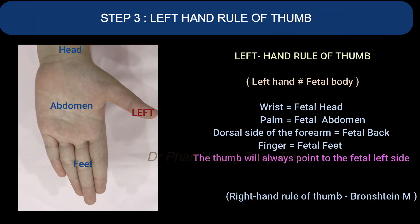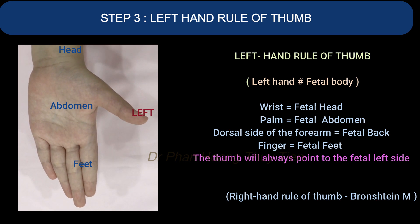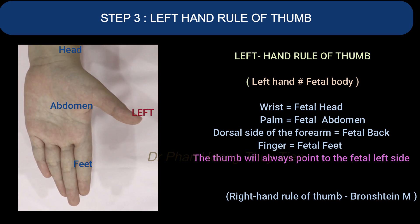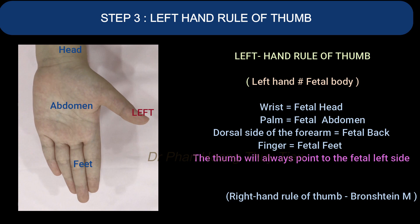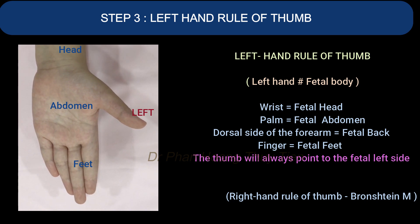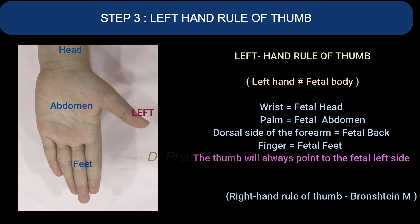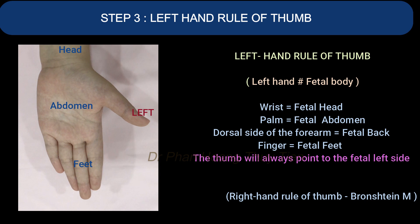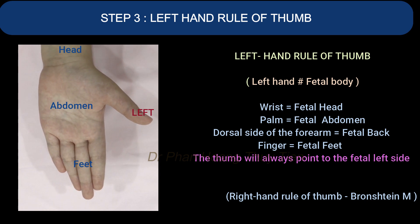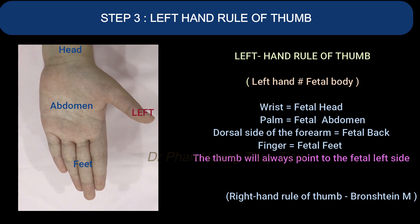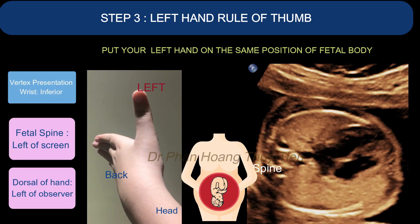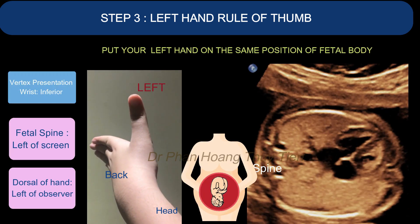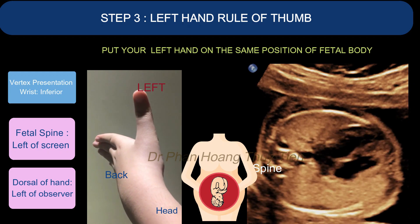We will be taking a look at the left-hand rule of thumb, adapted by Bronston. The wrist represents the fetal head, the palm the fetal abdomen, the dorsal side of the forearm the fetal back, and the fingers equal the fetal feet. Note that the thumb will always point to the fetal left side. Put your left hand in the same position as the fetal body.